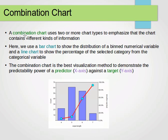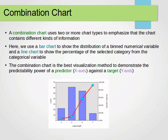The second one is the combination chart. It uses two or more chart types to emphasize that the chart contains different kinds of information — we've seen this before. Here we use a bar chart to show the distribution of a binned numerical variable and a line chart to show the percentage of the selected category from the categorical variable. It's a good way to visualize and demonstrate predictive power. The x-axis shows sepal length, the y-axis shows count and percentage, combining the bar chart and line chart as explained in the previous videos.